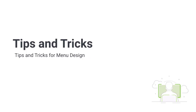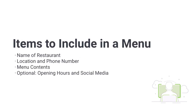Hi there, welcome back. Before we start with this course, there are a few tips and tricks to take into consideration before designing your menu template. There are a few key elements you must have: name of the restaurant, location, and phone number. These are important if people are taking menus or trifold menus home, especially if you're designing for a takeaway restaurant. Make sure that the menu contents are divided into sections with prices — this will ensure everything is nicely laid out and separated into categories. Optional elements are opening hours — helpful for takeaway restaurants — as well as social media handles, which are becoming increasingly popular to attract customers.